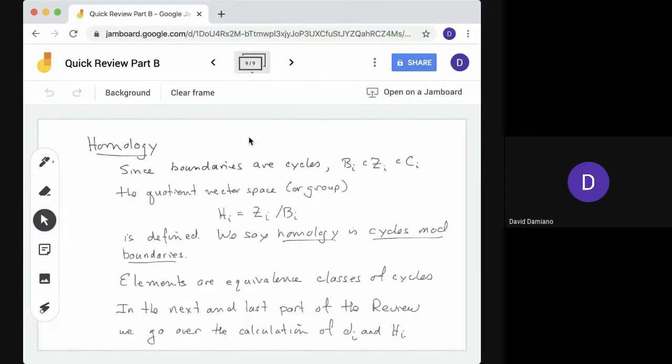So now to homology. We have boundaries or cycles, so that's Bi contained in Zi, and it's also contained in the chains. We can define the quotient of Zi by Bi. This is a vector space quotient. And Hi is defined to be this quotient. So we say homology is cycles, not boundaries. So an element of Hi is called a homology. The elements are equivalence classes of cycles. And the next and last part of the review, we go over the calculation of boundary and Hi for some examples. This is the end of part B. Thank you.